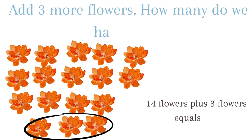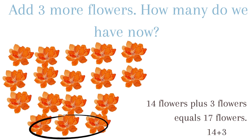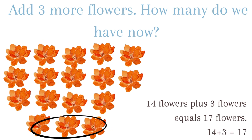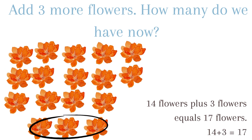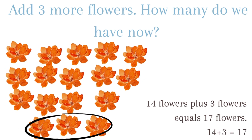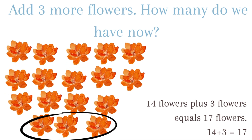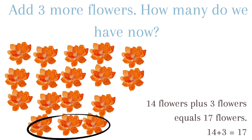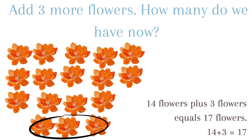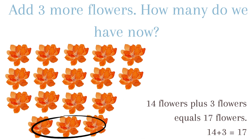Add 3 more flowers. How many do we have now? 14 flowers plus 3 flowers equals 17 flowers. 14 plus 3 equals 17.